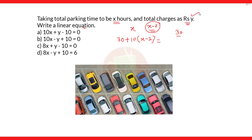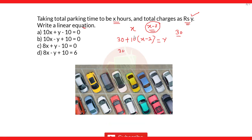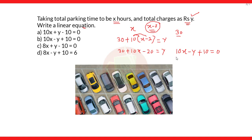This total charge equals rupees y. Solving: 30 plus 10x minus 20 equals y, so 10x plus 10 equals y. Taking y to the other side gives the equation 10x minus y plus 10 equals zero. So the correct answer is option B: 10x minus y plus 10 equals zero.